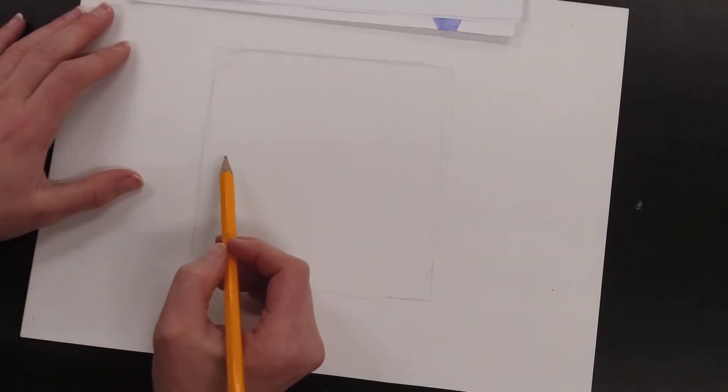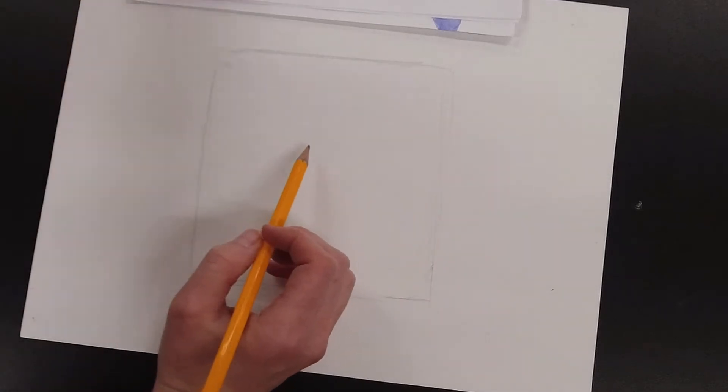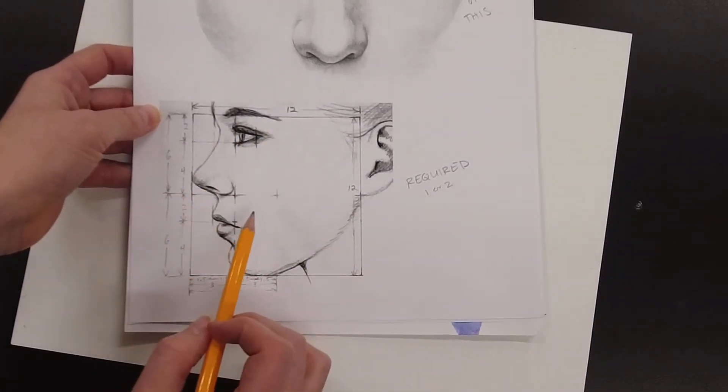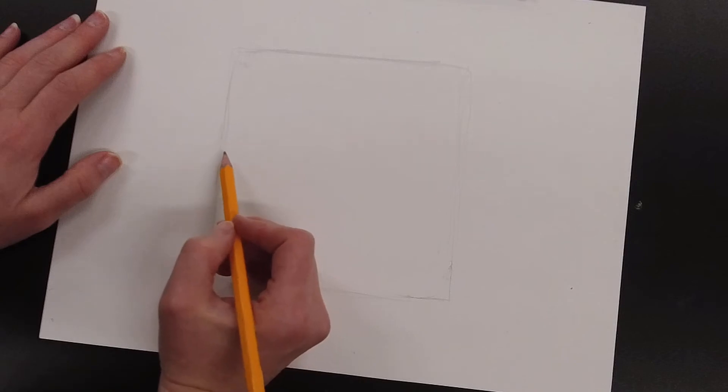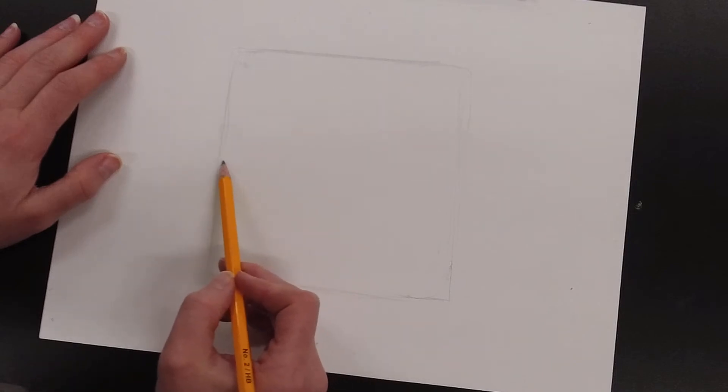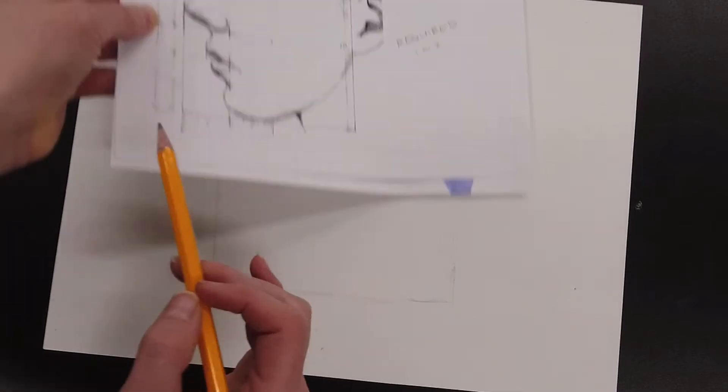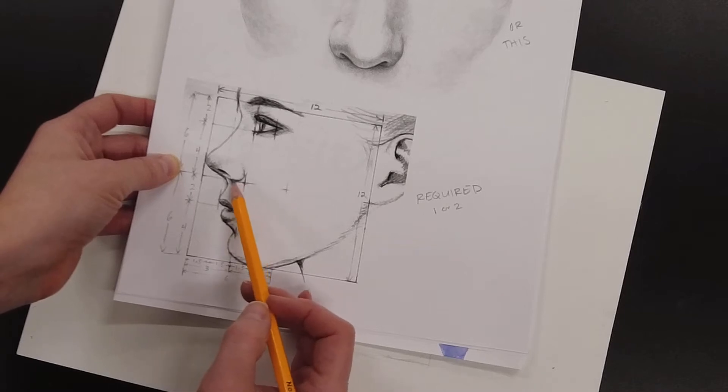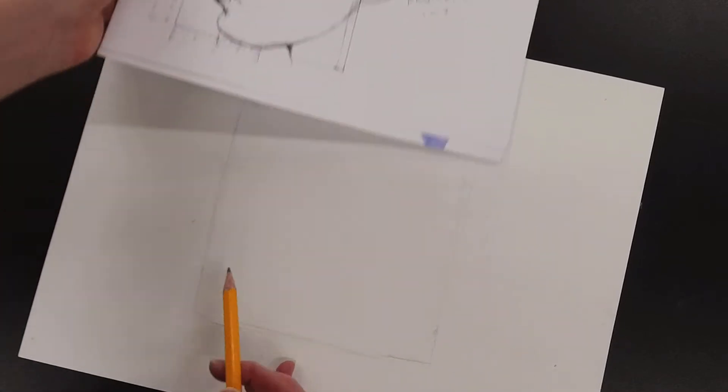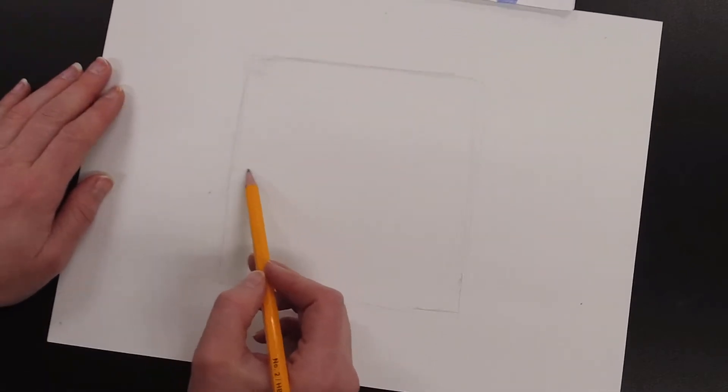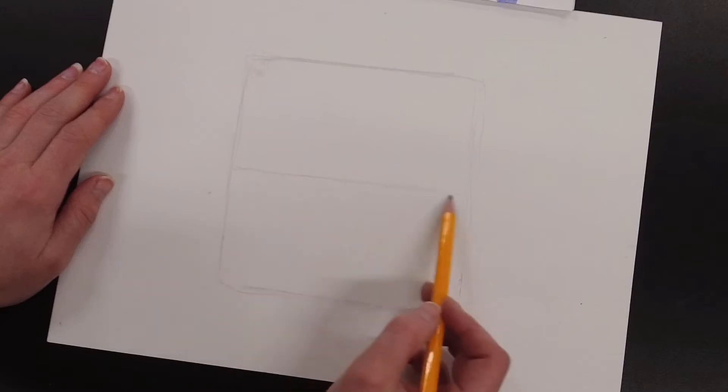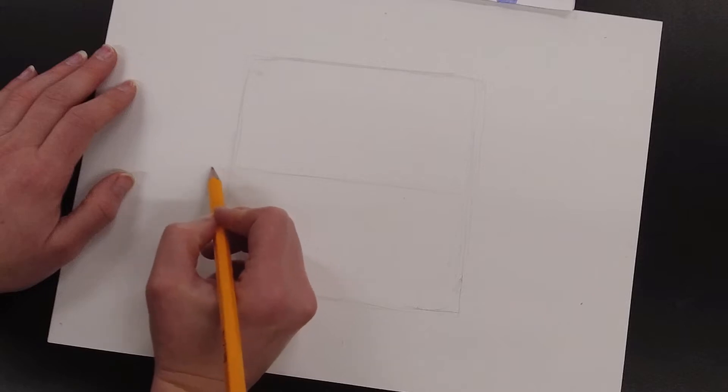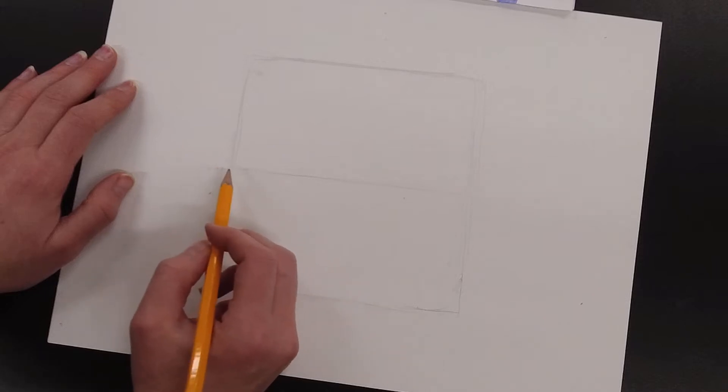So the first thing I'm going to do is just draw my square in here. But then the next thing I'm going to do is go ahead and just start dividing that square into sort of the grid lines that we see here so that I can then start to place the facial features where they belong. So the first one I'm going to do is that sort of halfway line here, which is actually the bottom of the nose. I'm just going to put nose here to remind myself that that is the bottom of the nose.